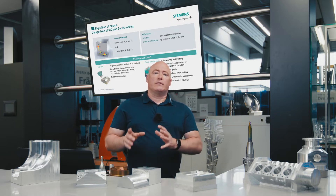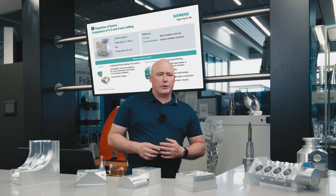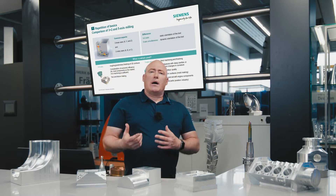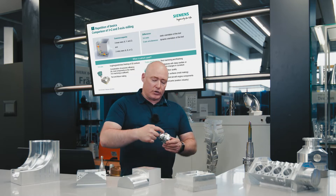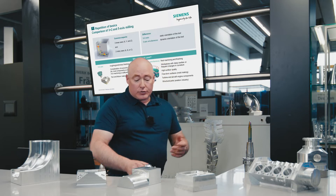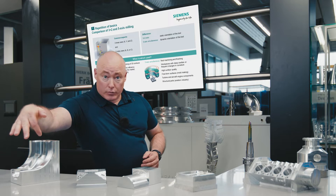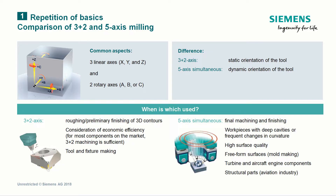This method is primarily used in tool and mold making. In dynamic 5-axis machining — simultaneous machining — the aim is final machining for finishing, meaning we can achieve very good surface qualities. This type of machining is ideal for components with large cavities and frequent changes in curvature, freeform surfaces for mold making, and turbine and aircraft engine components, as well as structural components in aircraft.